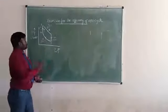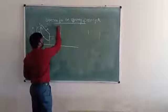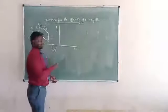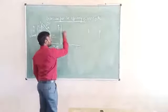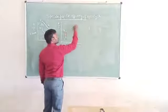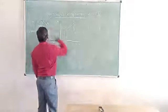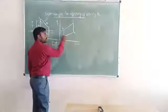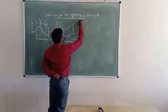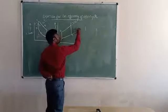Now let me draw the temperature-entropy (TS) diagram. This is temperature on the Y-axis and entropy on the X-axis. So 1-to-2 will be adiabatic compression and 2-to-3 is constant volume. Then 3-to-4 is adiabatic expansion and 4-to-1 is constant volume. So 2-to-3 and 4-to-1 are both constant volume processes.